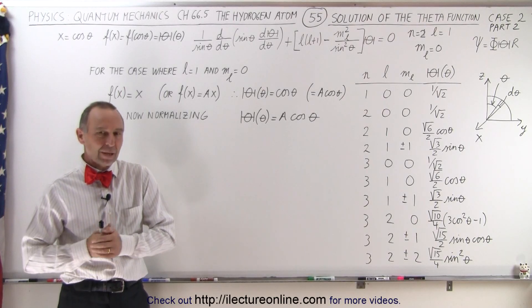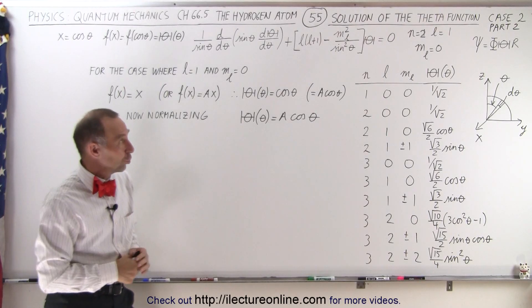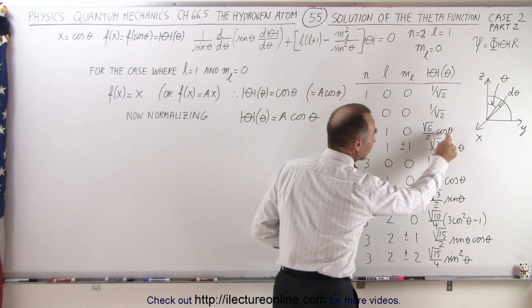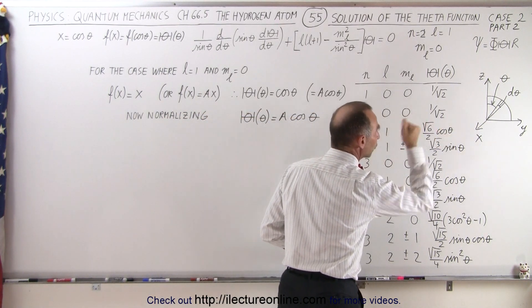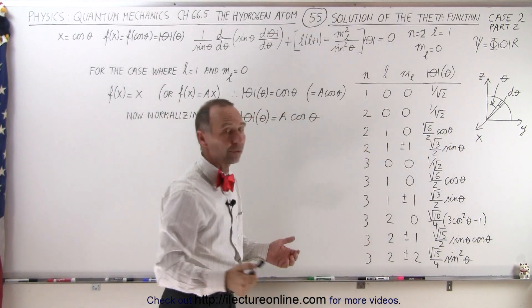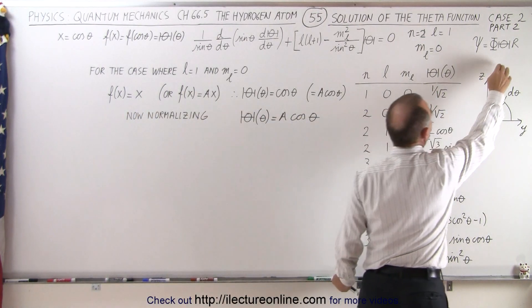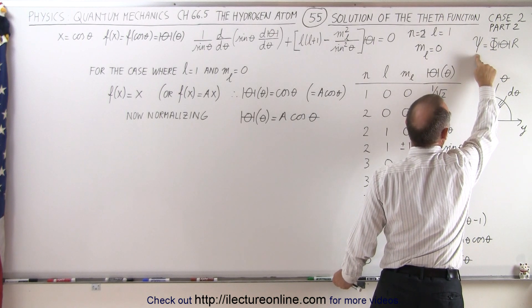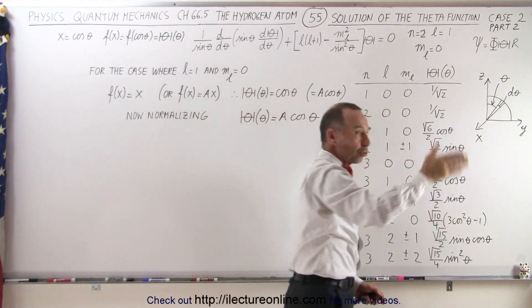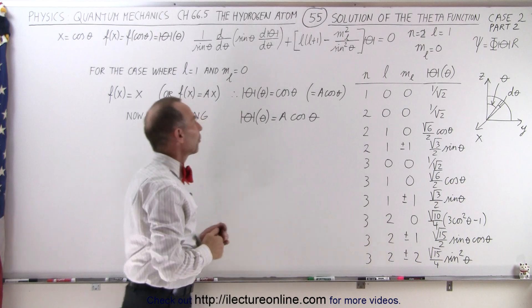Welcome to our lecture online. Now here's the second part for case two where we're going to find the exact solution, hopefully the square root of six over two times the cosine of theta, as the solution to the theta function, the theta portion of the Schrödinger equation solution, and that's the motion in the Zena direction.